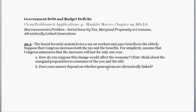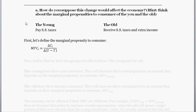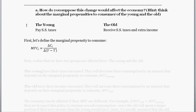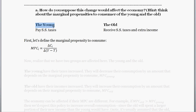Let's look at Part A, which asks: how do you suppose this change would affect the economy? The hint is to think about the marginal propensities to consume for the young and the old. In this simple example, social security taxes current workers — the young — taking money from them in taxes and handing it to the old, so the elderly receive those taxes as a form of extra income.